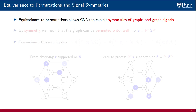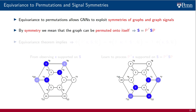Another implication of permutation equivariance, which also holds for both graph filters and GNNs, is the exploitation of symmetries in graphs and graph signals. We have discussed this at an intuitive level, but we can now state it formally. A graph symmetry exists when the graph can be permuted onto itself. Some graphs are invariant under the action of a given permutation. This means it is possible to rewrite S as P-transpose SP for some permutation P.